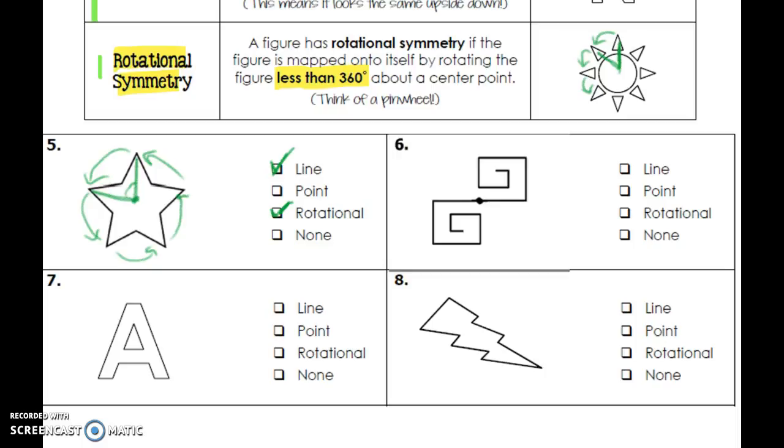So now let's move to the letter A down here. The letter A, I definitely could fold it here and it would match. So it does have line symmetry. It will not look the same upside down, and I know for sure that makes no sense, because there's no way to rotate that and still get the same image. So we're done with number seven.